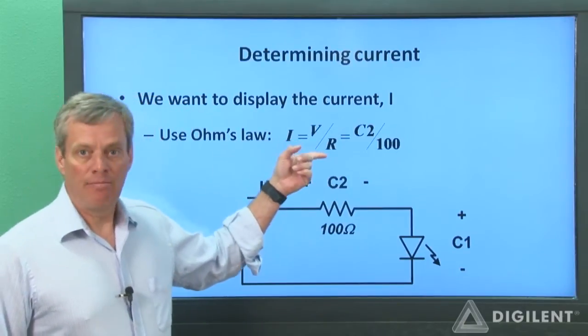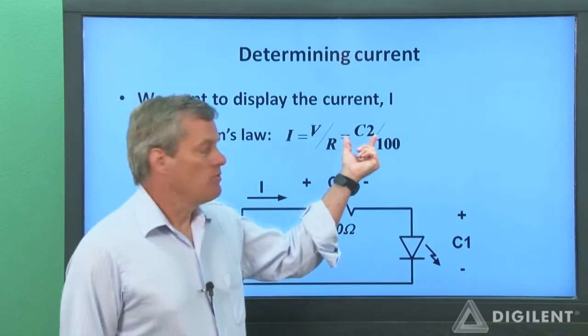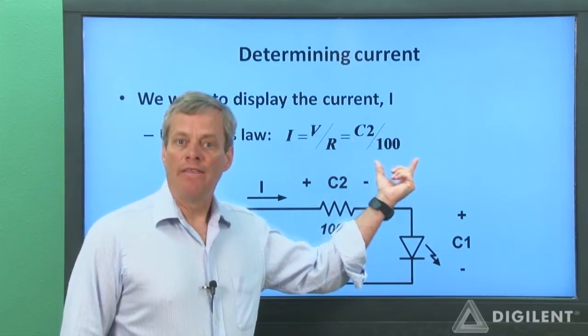Current is just the voltage divided by the resistance. Since our resistance is 100 ohms, it just means that we take the channel 2 voltage and divide that by 100.